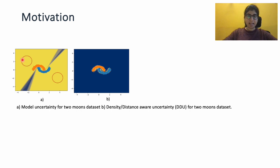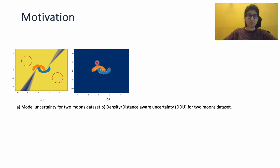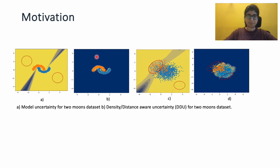For example, in Figure A we observe lower uncertainty in the red circle, but it is expected to be higher as this is an OOD region — therefore it is a failure mode. Distance-aware uncertainty captures the OOD detection problem better, as shown in Figure B.